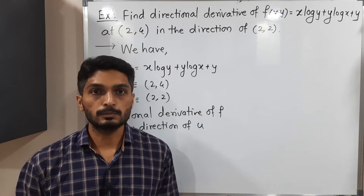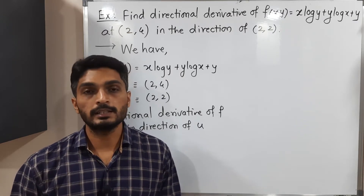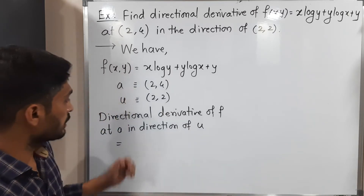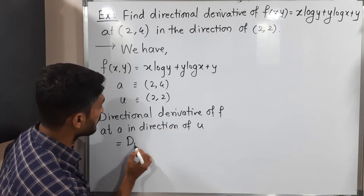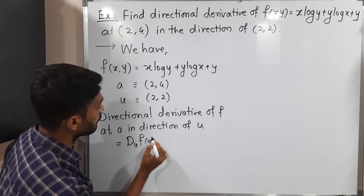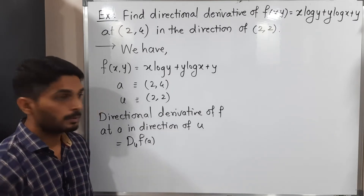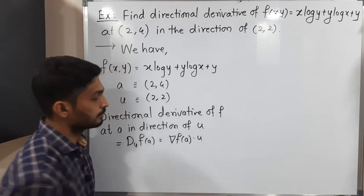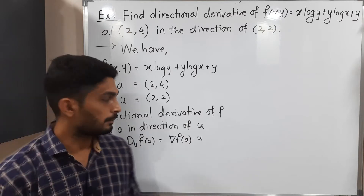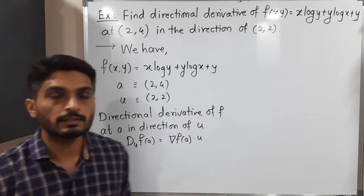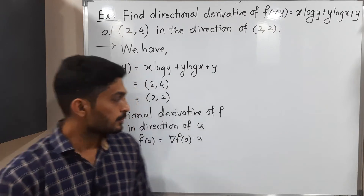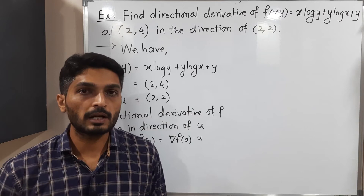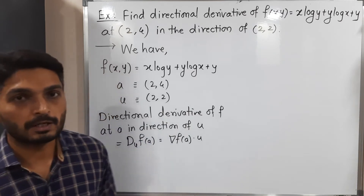Using gradient we can easily find the directional derivative. The directional derivative is denoted as D_u f(a), and the relation is: D_u f(a) = ∇f(a) · u. Using this relation between gradient of f and directional derivative, we can easily find it. So let us focus on the gradient — for that we need to calculate partial derivatives first.